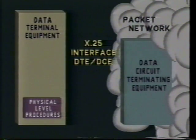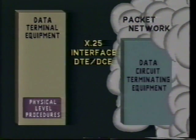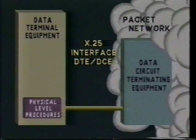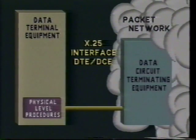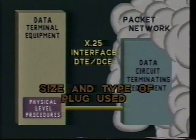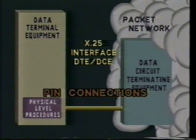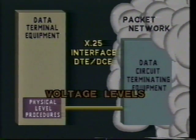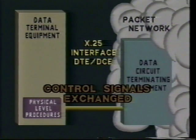The lowest level — the physical level — defines the physical, mechanical, and electrical characteristics required to establish a point-to-point synchronous circuit between the DTE and the DCE. At this physical level, X.25 specifies the size and type of plug used, pin connections, voltage levels, and the control signals to be exchanged.